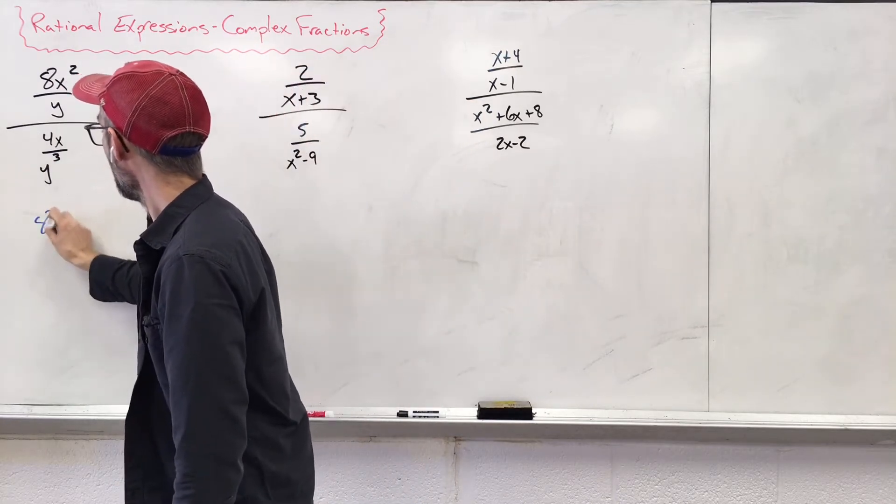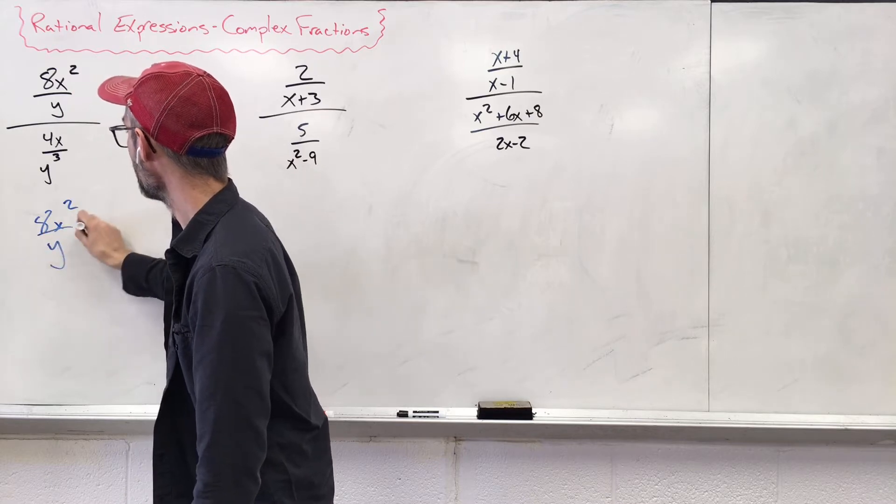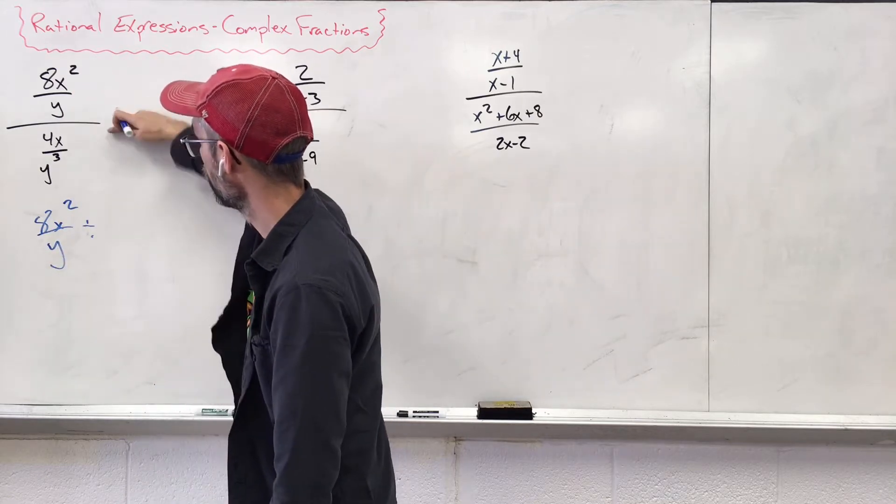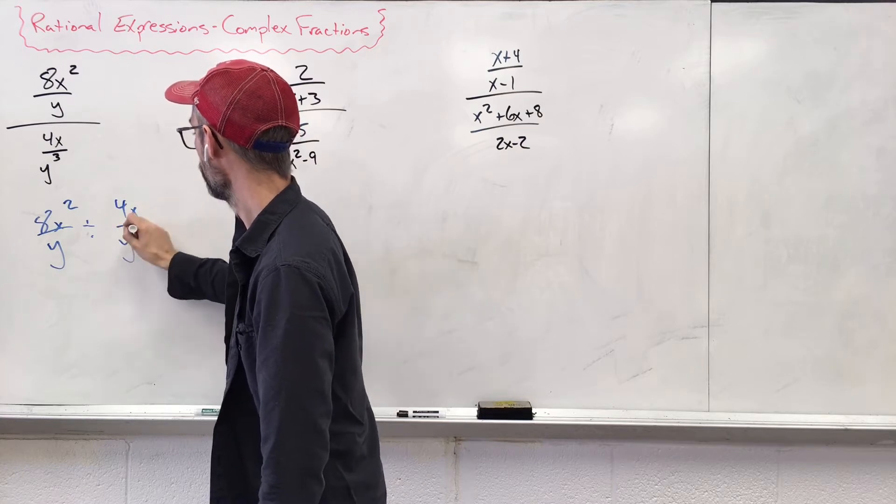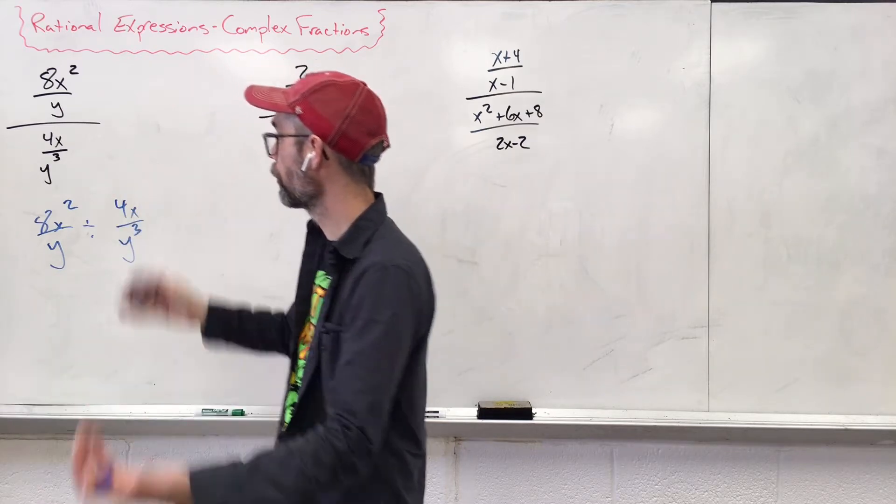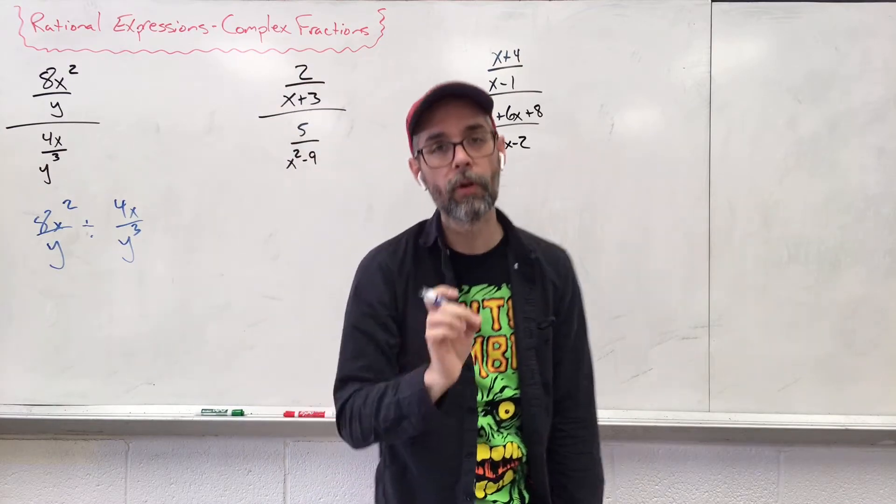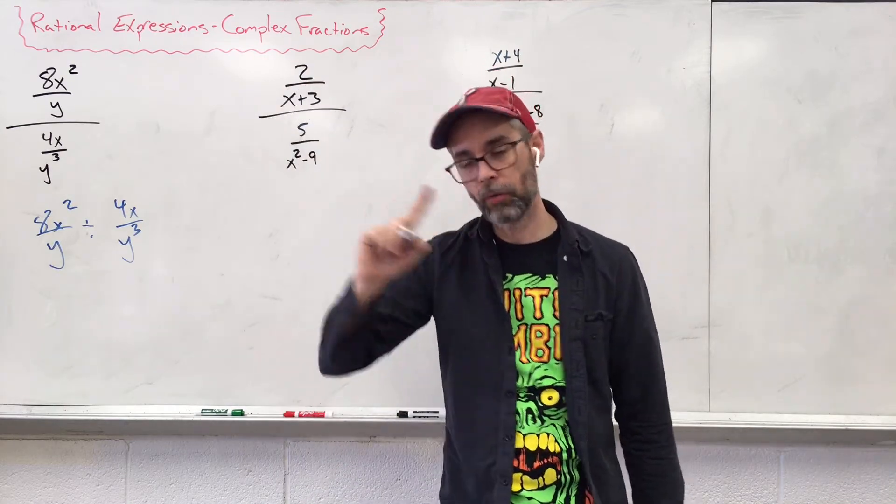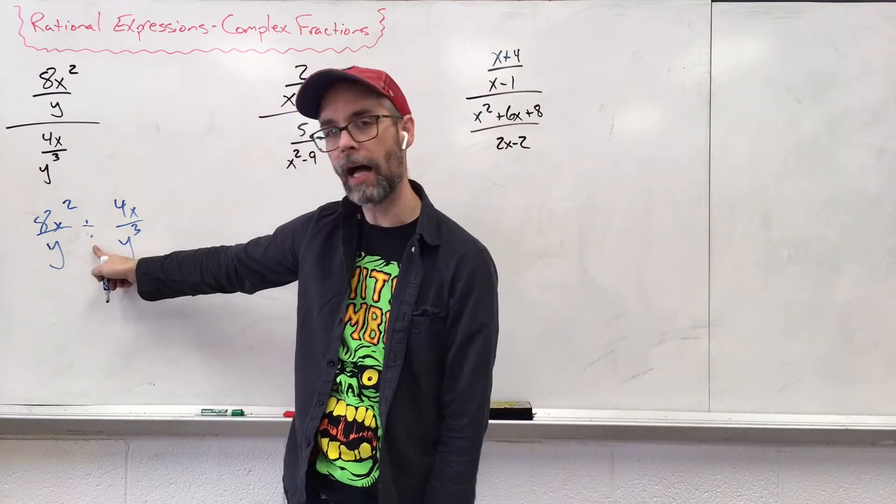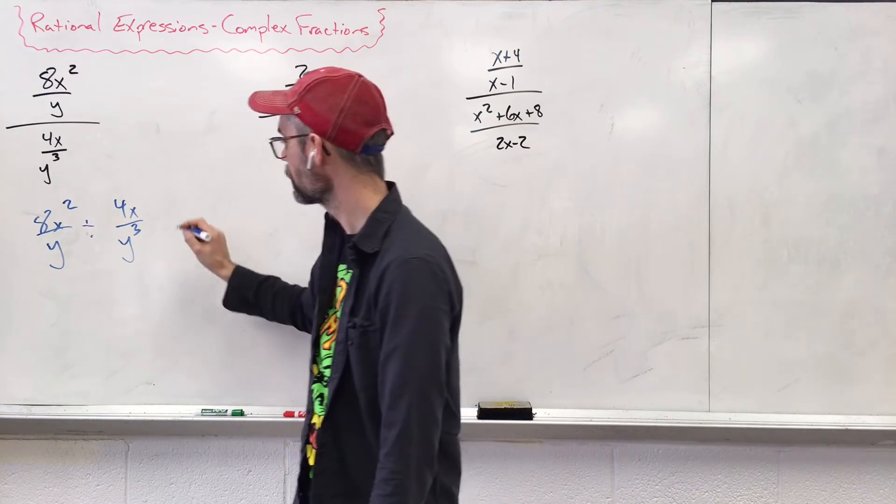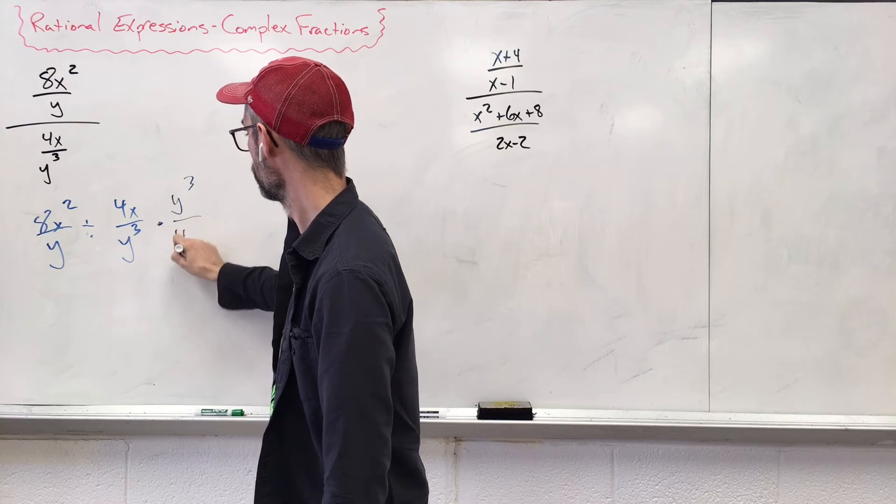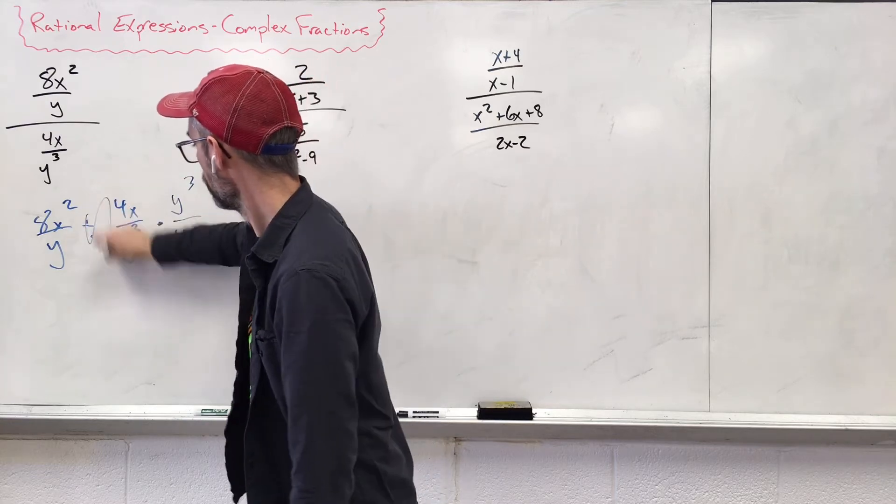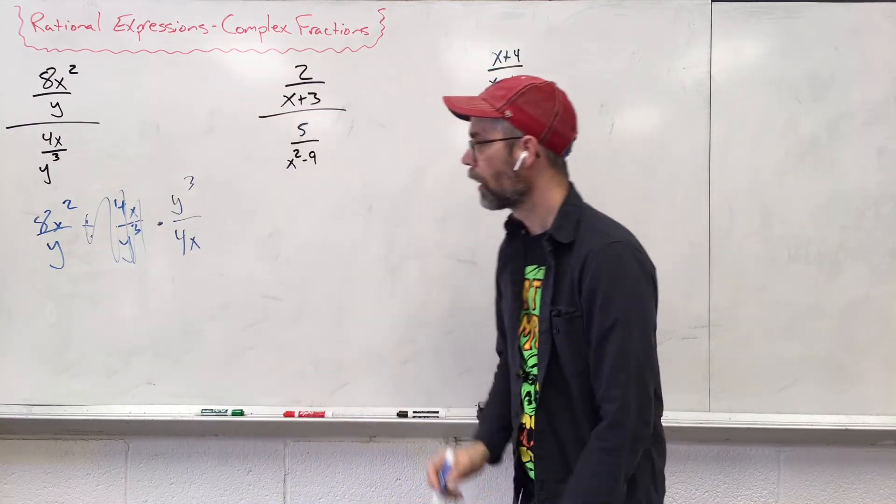So eight x squared over y divided by four x over y to the third. We're done. We just took this and made it into a form that we can understand. Now we also understand we can't divide by a fraction, so instead we multiply by its reciprocal.